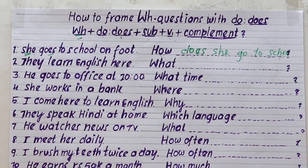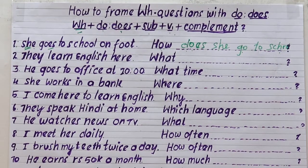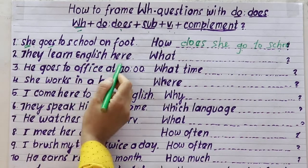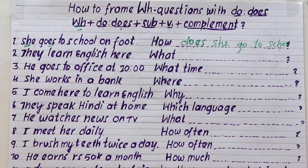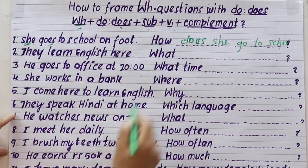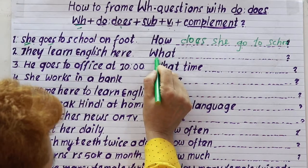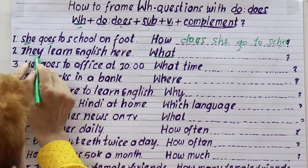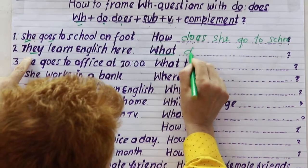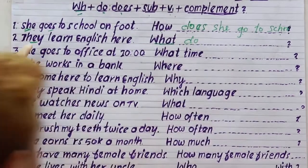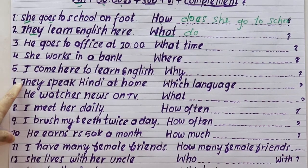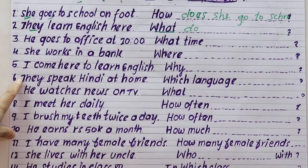Number two: They learn English here. They learn English here. What do they learn here? Answer: They learn English here.